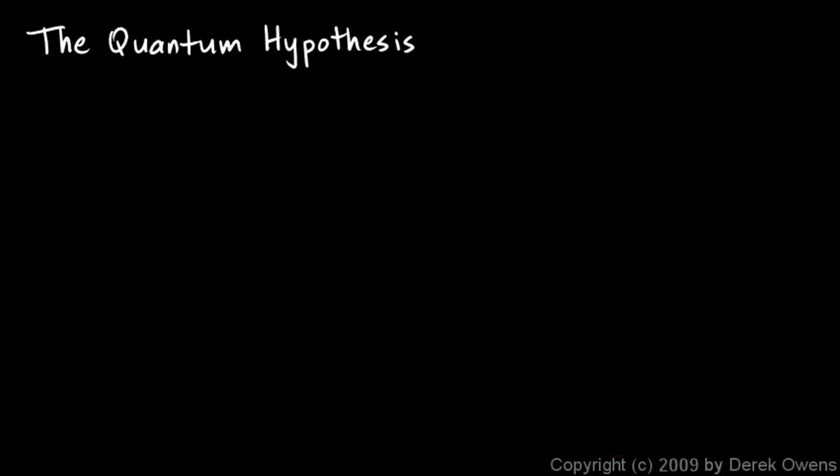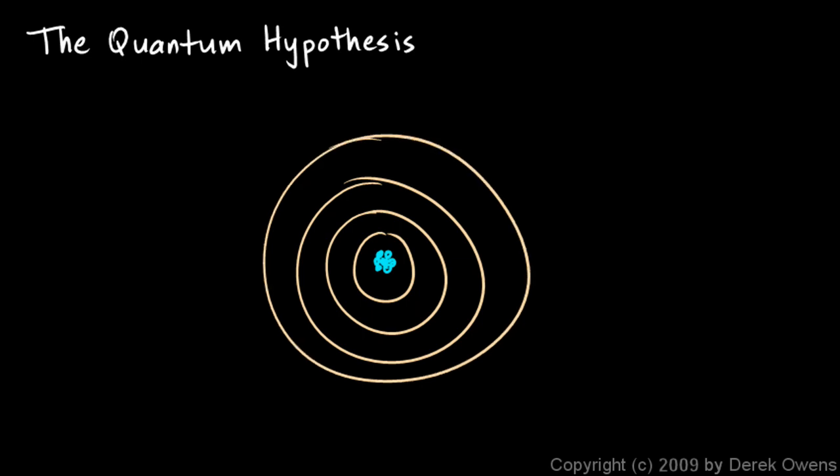To illustrate this, we often draw a picture like this. We draw the nucleus of an atom—just a bunch of little particles—and then we draw circles around it. The circles represent different energy levels.